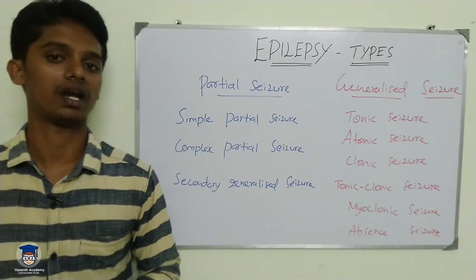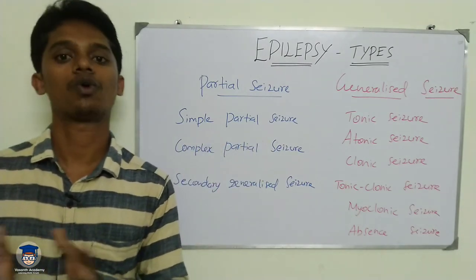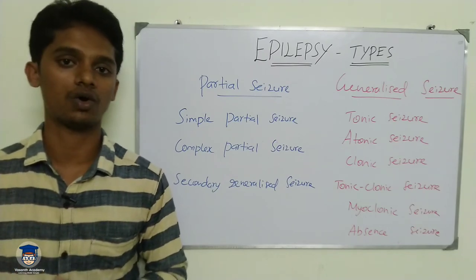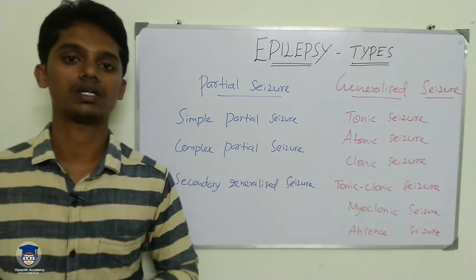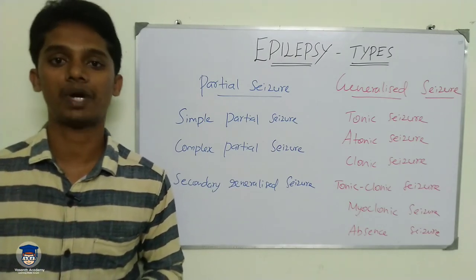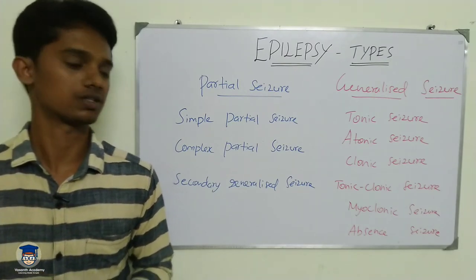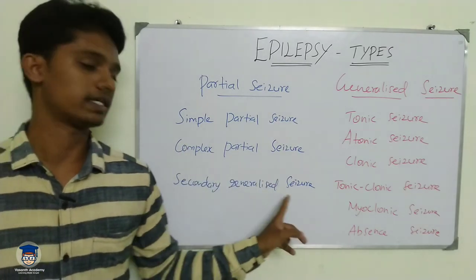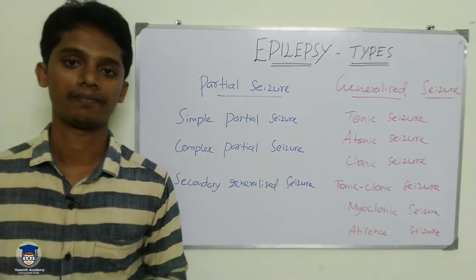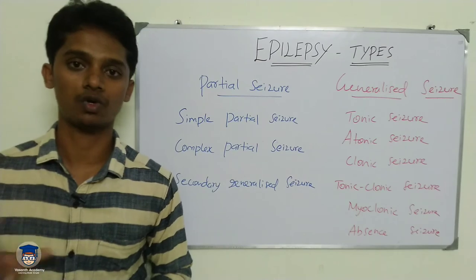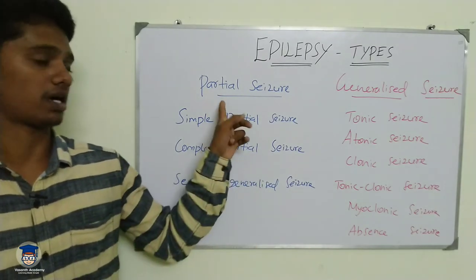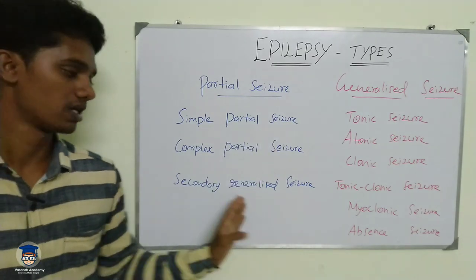Under partial seizures, there are three subtypes. First is simple partial seizure — neuronal activity is on one side of the brain, and consciousness is preserved and intact. Second is complex partial seizure — neuronal activity is also on one side, but consciousness is completely lost, meaning there is an impairment in consciousness. Third is secondary generalized seizure — it first begins as a partial seizure in one hemisphere, then within a few minutes it spreads and becomes a generalized seizure.